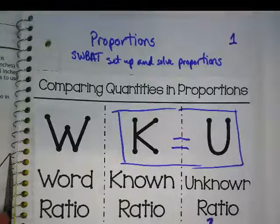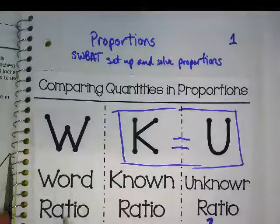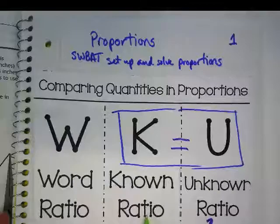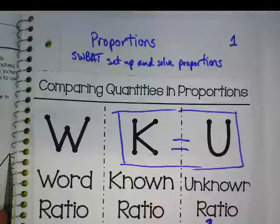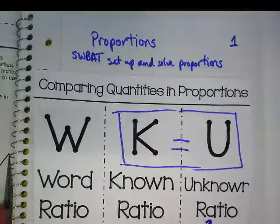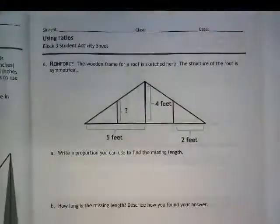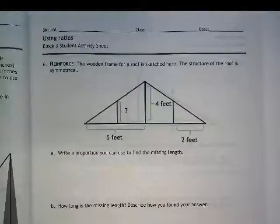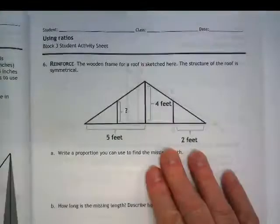Okay, we're going to start by using our idea of a word ratio, a known ratio, and an unknown ratio to go back and look in our book. And I would like you guys to be on page 13 where you'll see this image here.